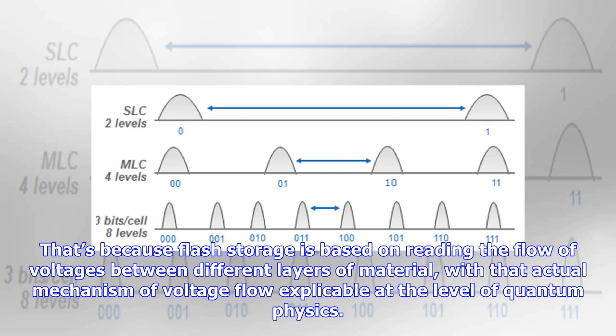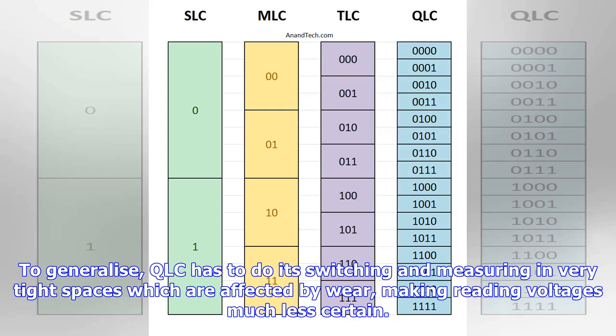That's because flash storage is based on reading the flow of voltages between different layers of material, with the actual mechanism of voltage flow explicable at the level of quantum physics. QLC has to do with switching and measuring in very tight spaces, which are affected by wear, making reading voltage much less certain.